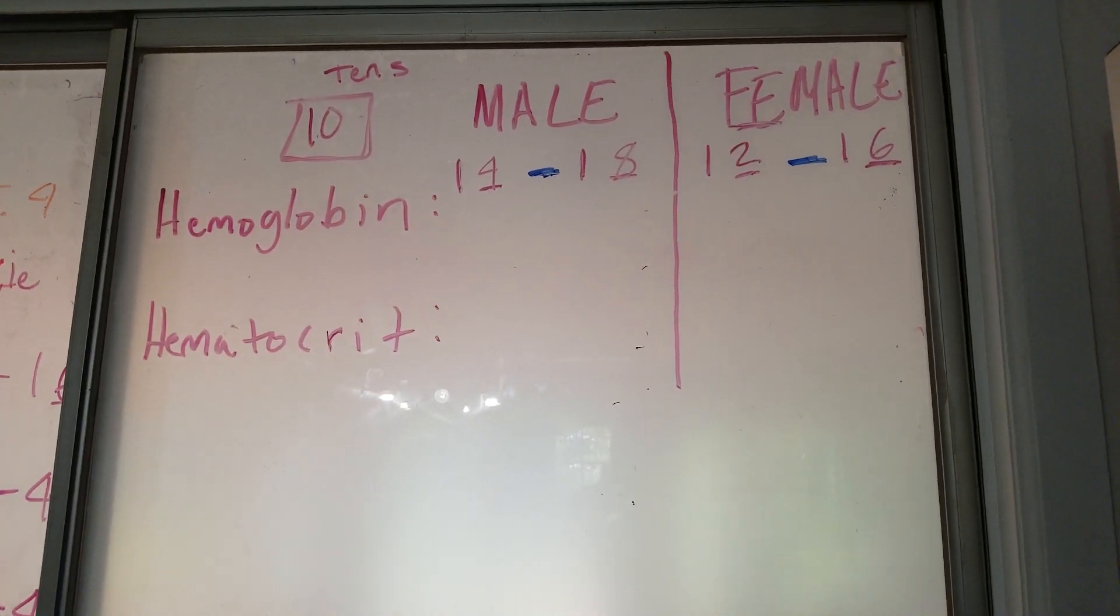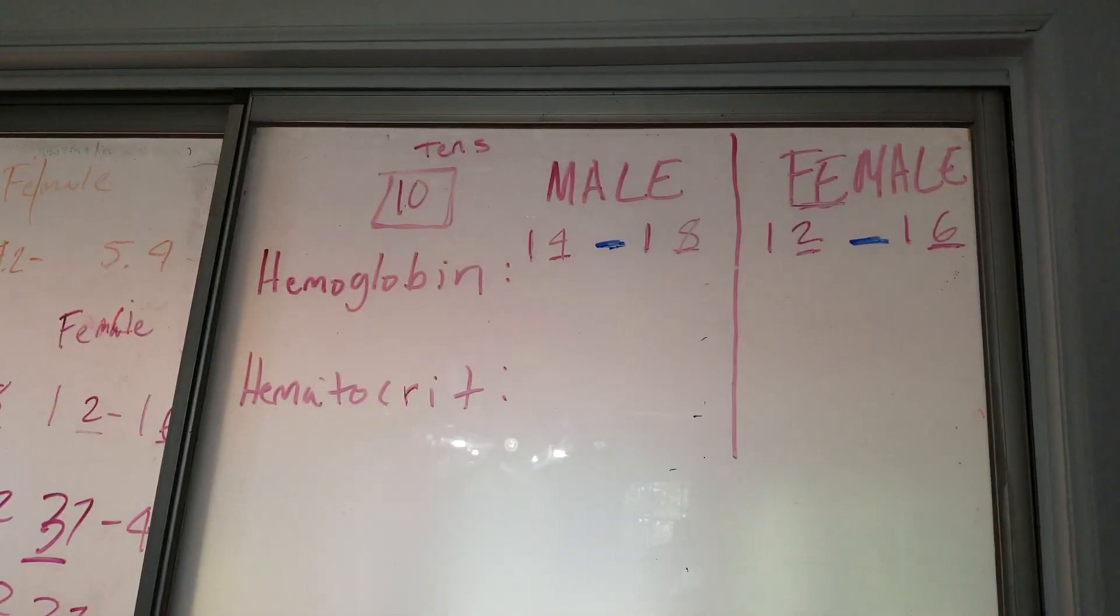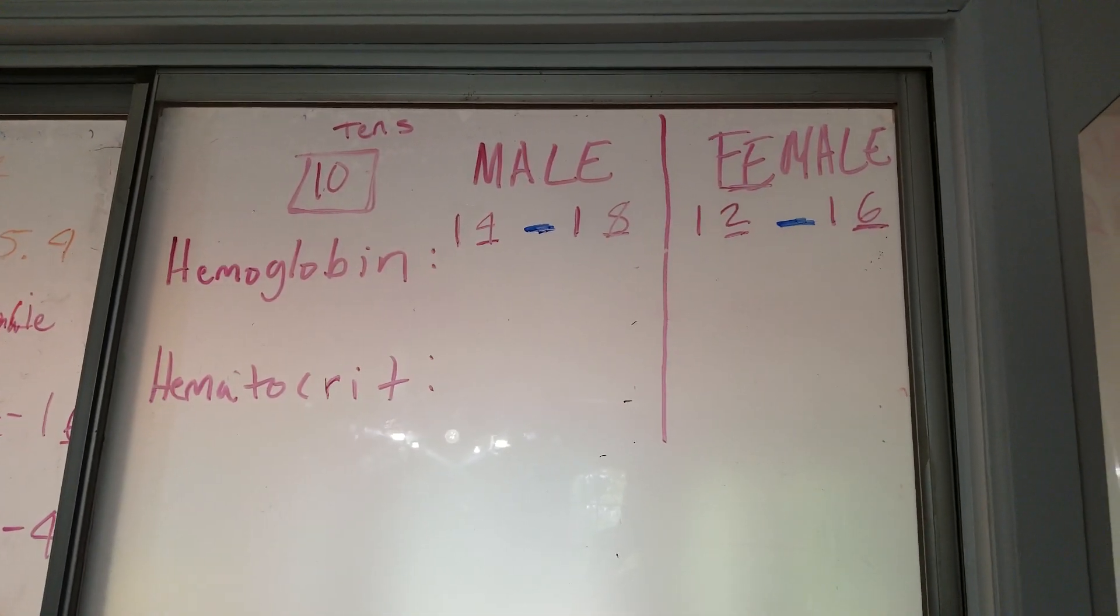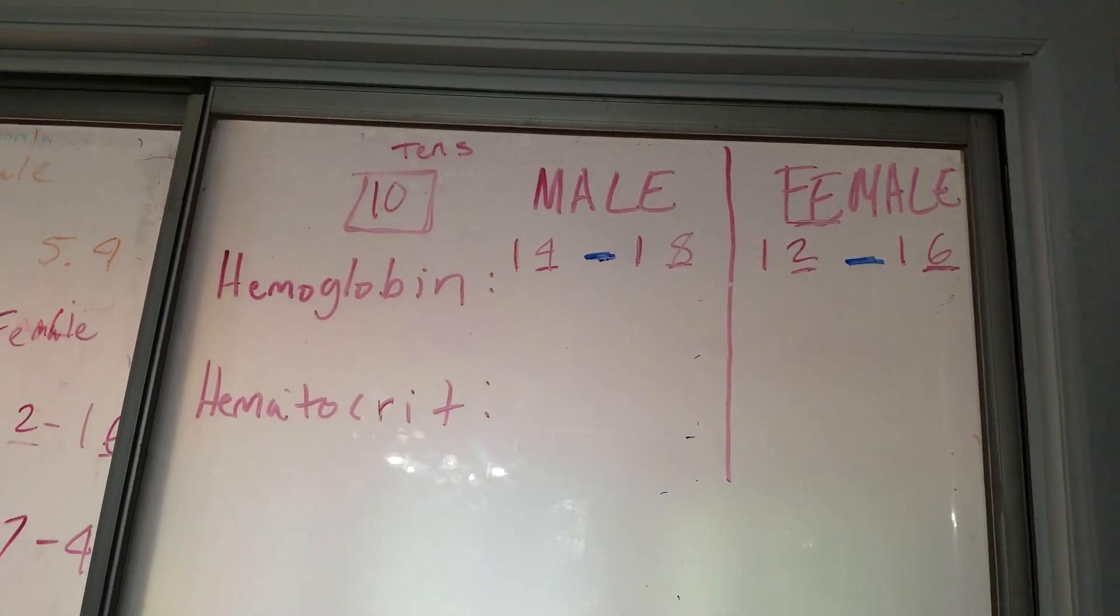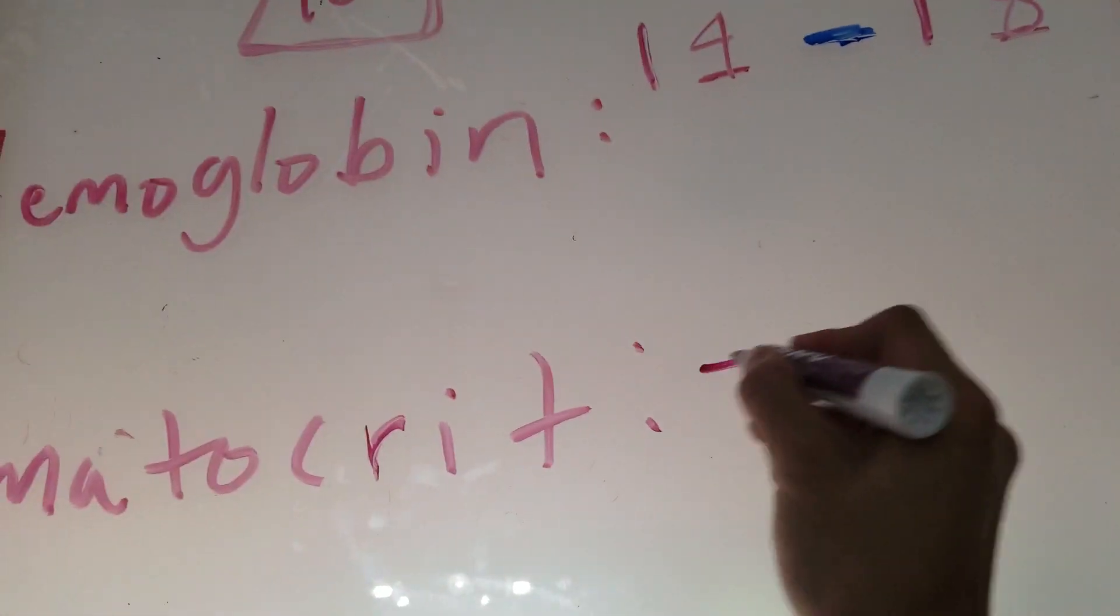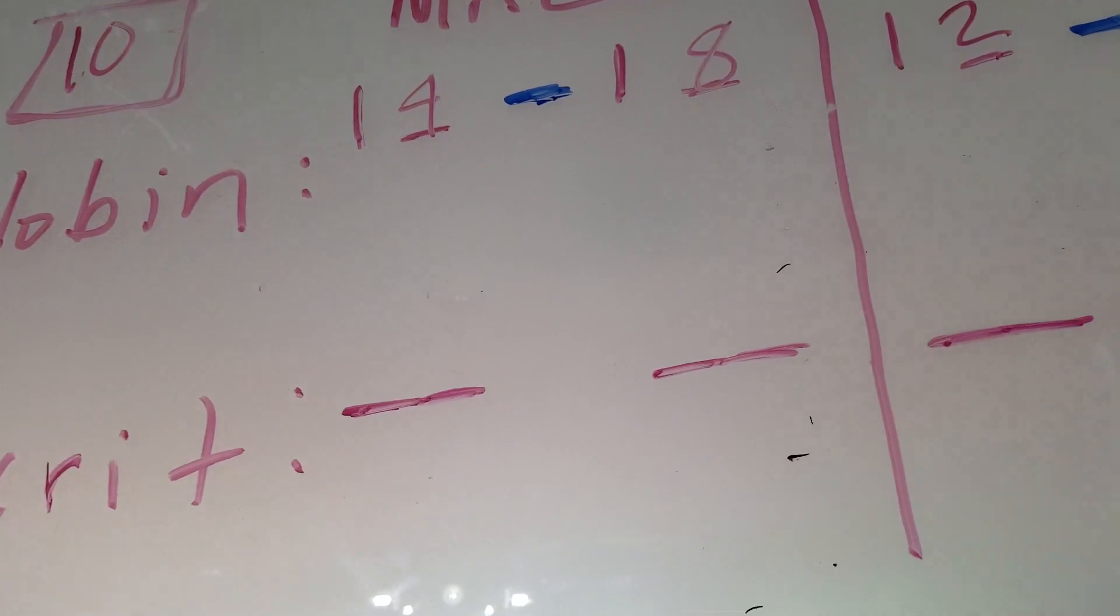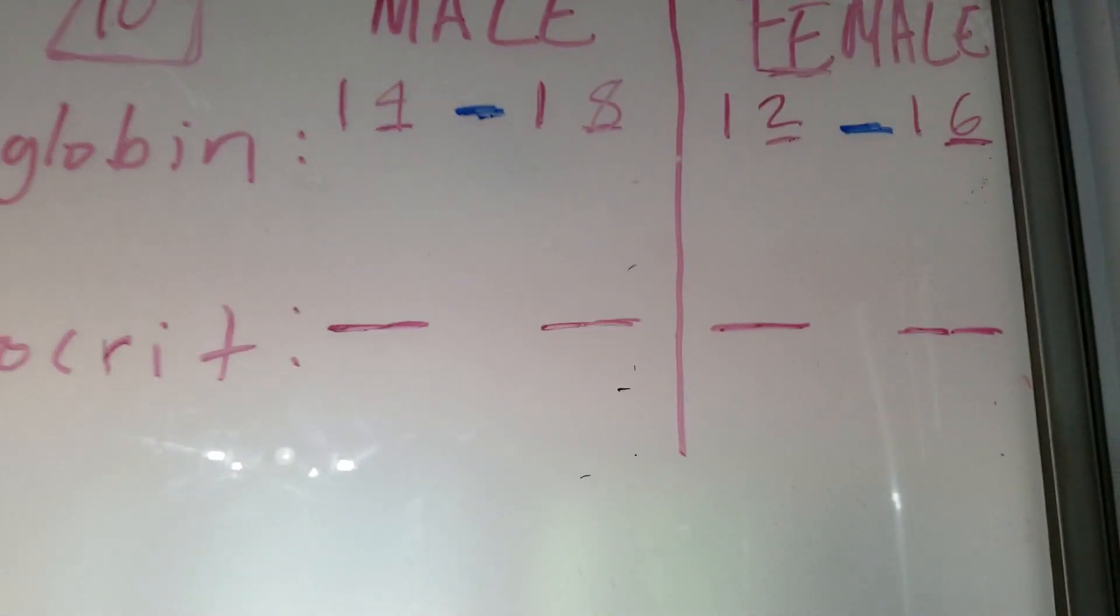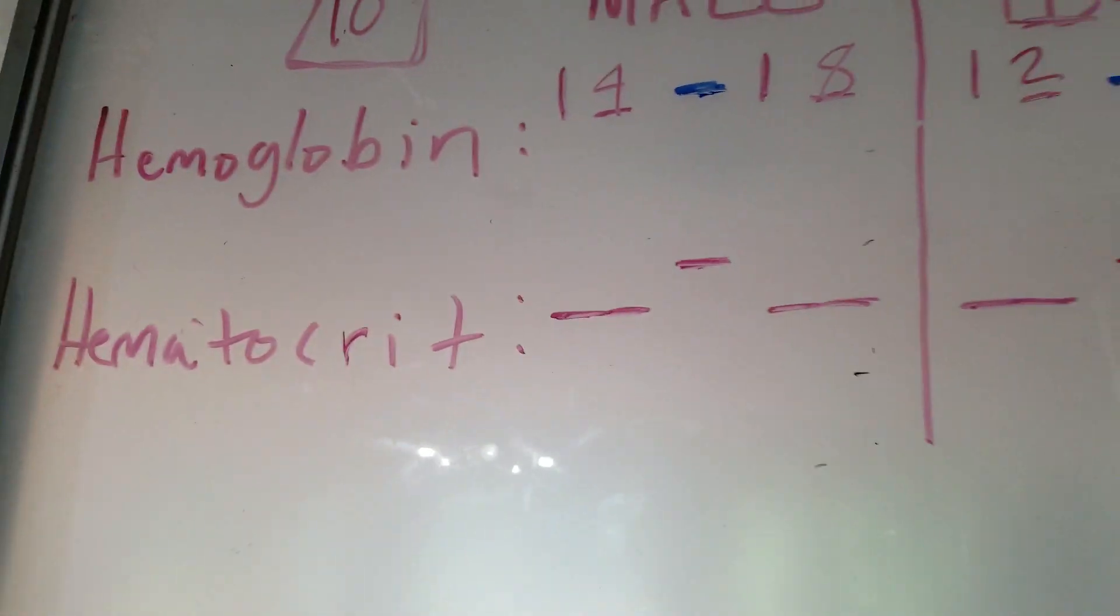Now we're going to go with hematocrit. We know that it's still in the tens, but we're not sure which tens it's going to be like. If it's going to be 20, 30, 40, 50, 60s. So we're just going to draw blank spaces right here. And then the range.